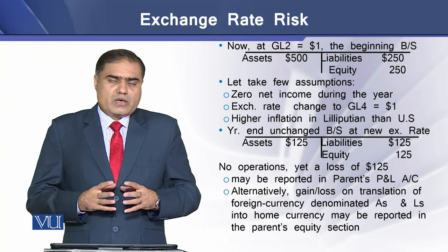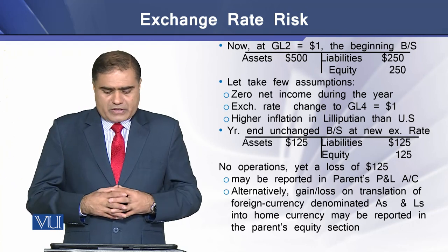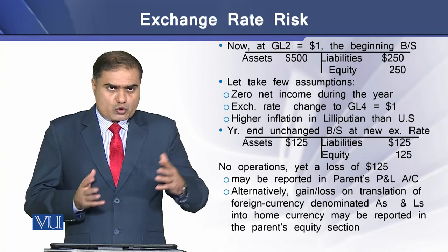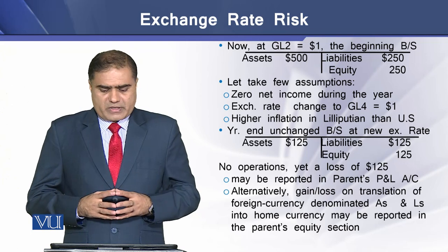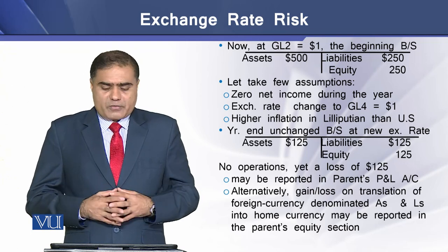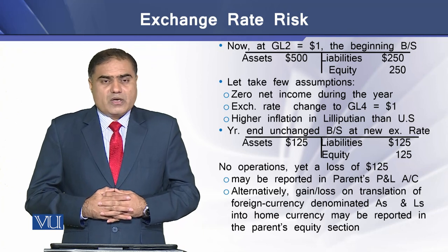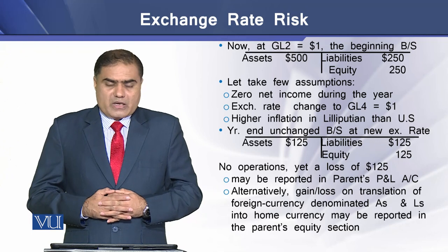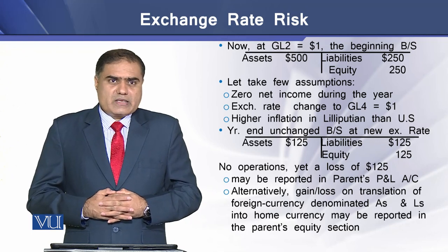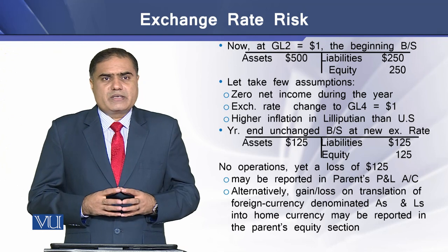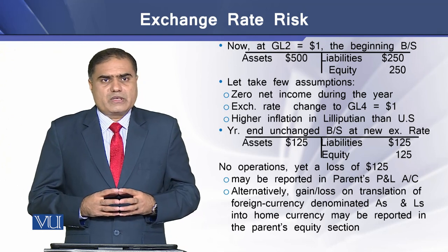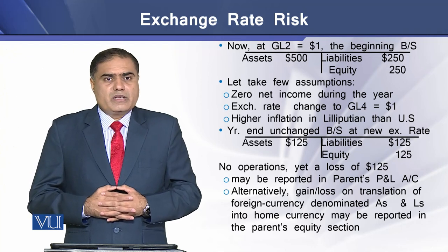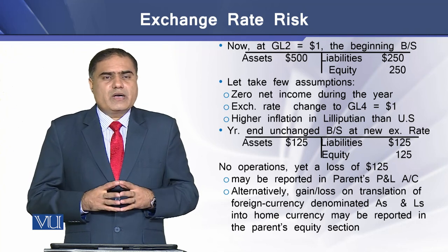Now assume that throughout the year the foreign subsidiary has no business operations, meaning there is zero net income. The exchange rate then changes to 4 GL per 1 US dollar, and this higher exchange rate is due to higher inflation in that foreign country.